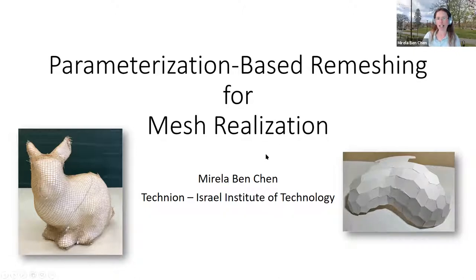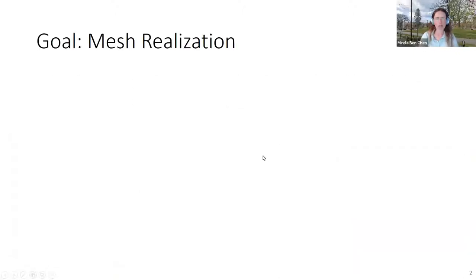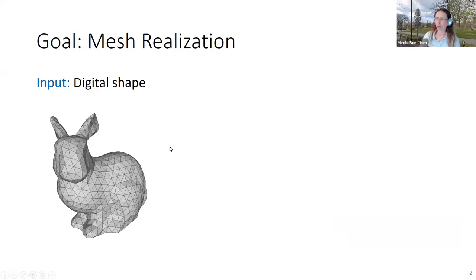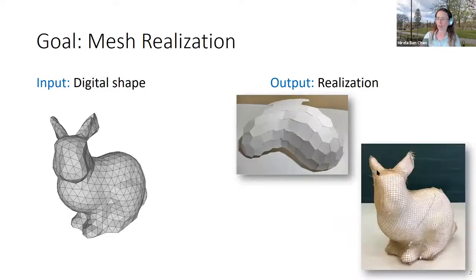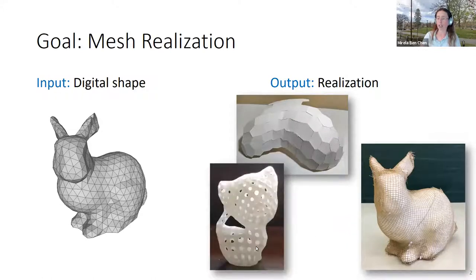Today I want to talk about mesh realization. Given an input digital shape, which you usually represent using a triangle mesh, we want to generate some physical realization of it. This can be made from cardboard, some sort of mesh fabric, or even 3D printed — but we are looking at the surface print only, some sort of lightweight 3D print.